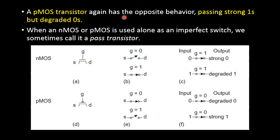PMOS transistor has the opposite behavior of NMOS transistor. That is, PMOS transistor passes strong 1 but degraded 0. In a PMOS transistor, when it is in on condition, if we give 1 as the input, then at the output you will be getting the same 1 with no degradation — so that only we say it is strong 1. But if you are giving 0 as the input, at the output you will not get 0; you will be getting a degraded output. So PMOS transistor acts as a perfect switch in passing strong 1 but as an imperfect switch when passing 0.